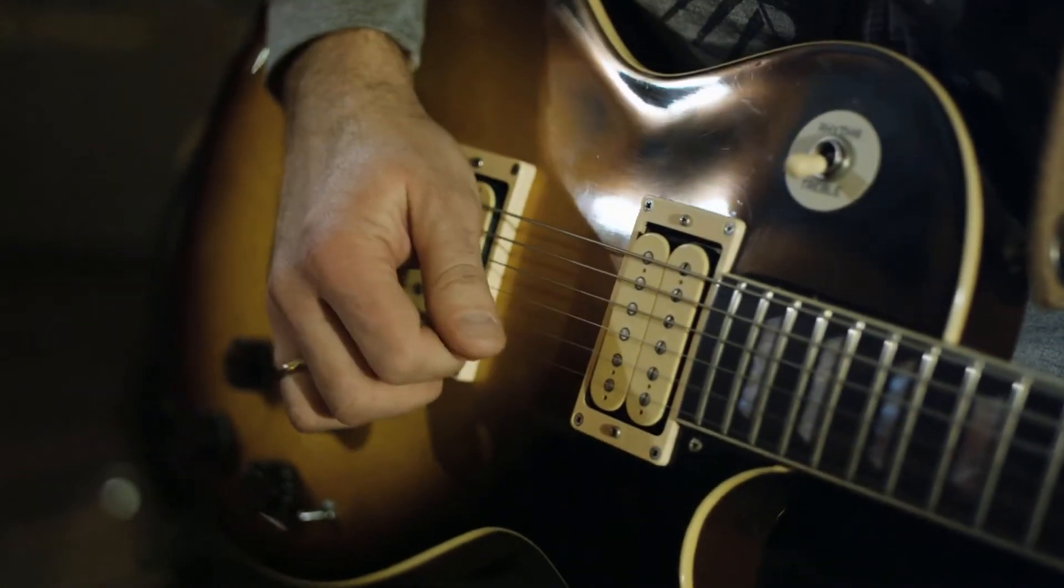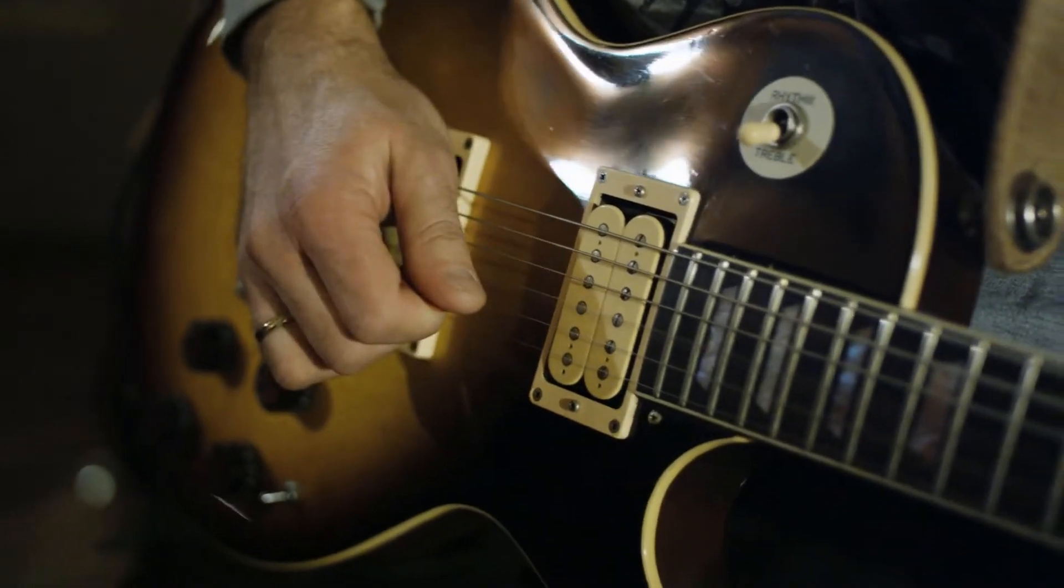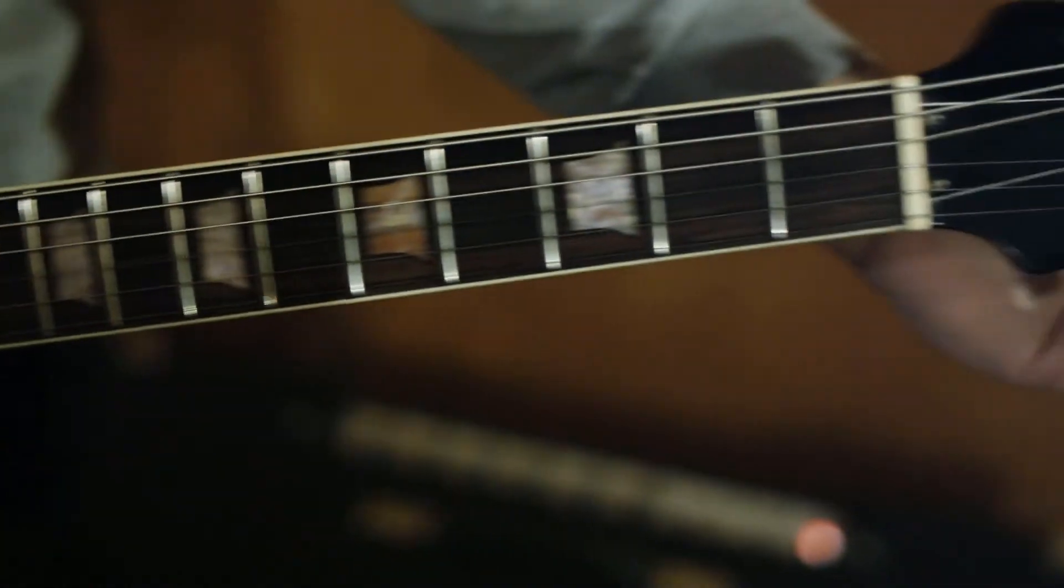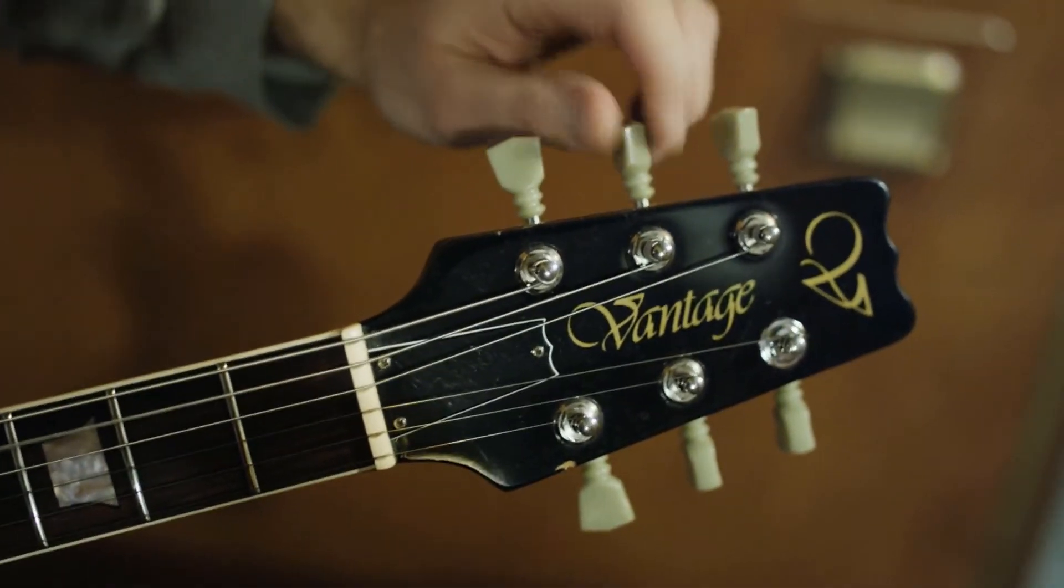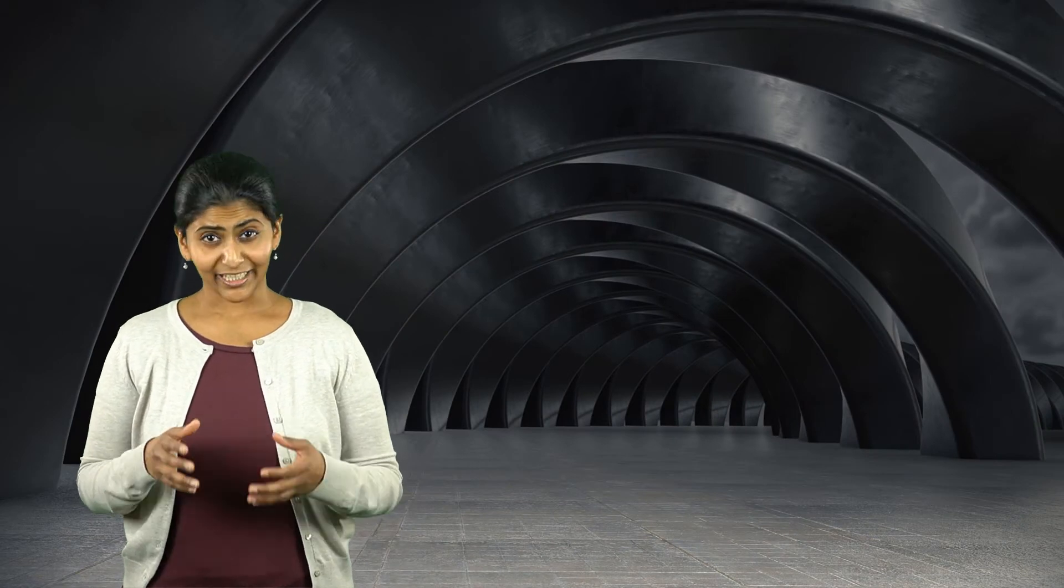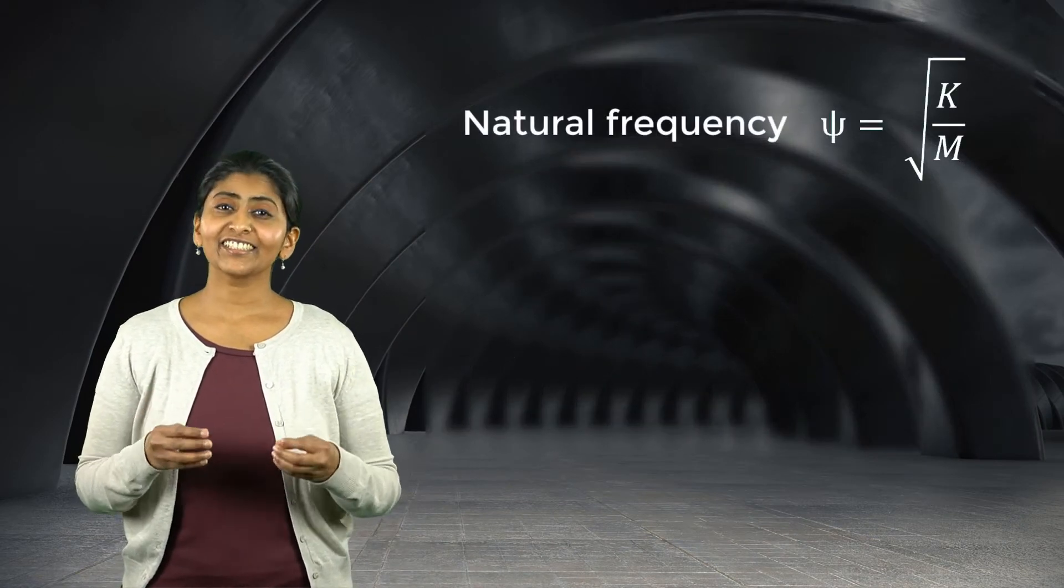To understand the effect of pre-stress on natural frequency, let's look at the example of guitar tuning. When we tune a guitar, we effectively stretch or loosen the strings. By doing so, we alter the stress in them which changes its stiffness. Therefore, it affects its natural frequency.